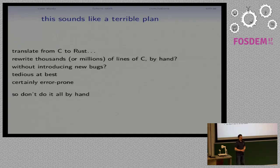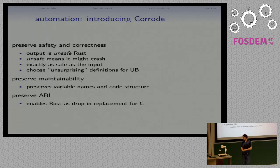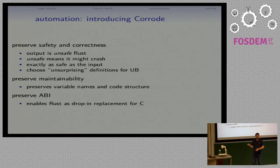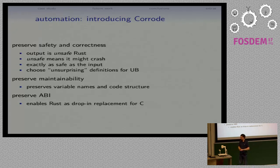So maybe the answer is let's not do this by hand. Maybe the answer is we should automate this process of translating C to Rust. I'd like to tell you about this project I've been working on for a little less than a year now called Corrode, which is all about automating the process of translating C code to Rust.